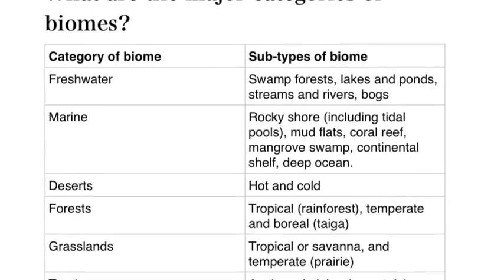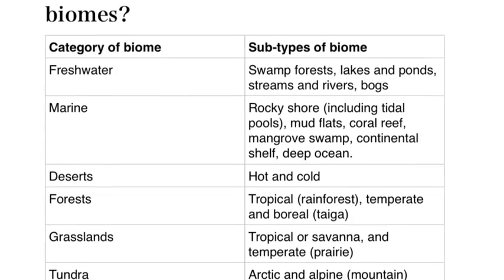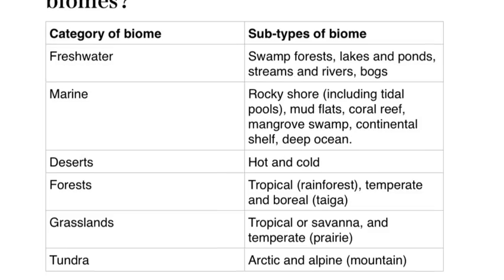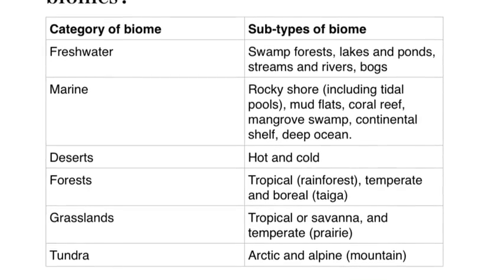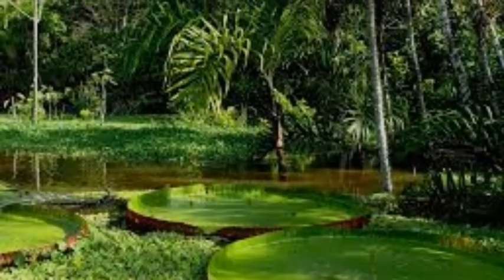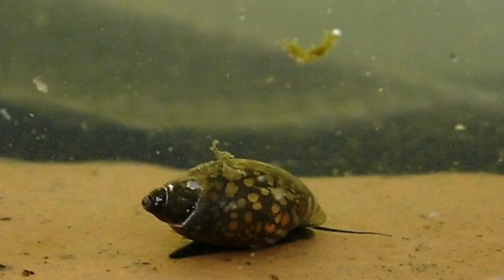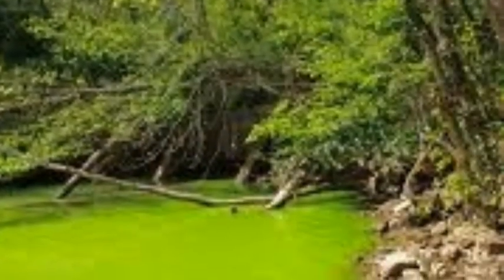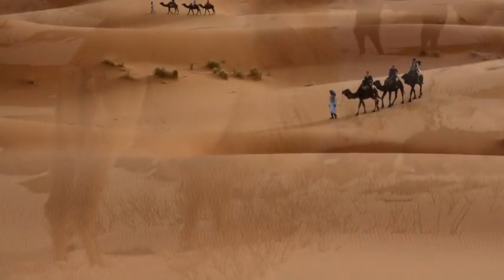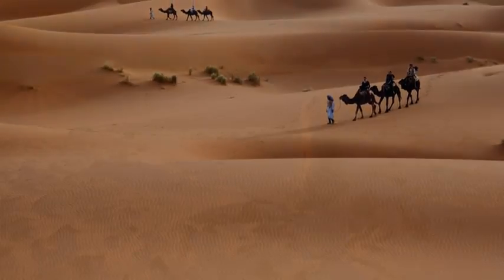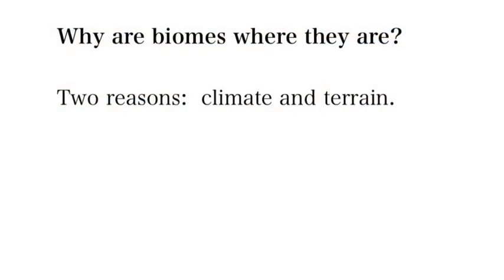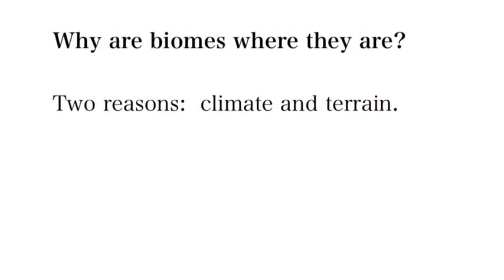Within that mix, you have these subtypes — I would pause this and write all these down. For example, with fresh water, you have swamps, the bottom of lakes, rivers, and ponds. With deserts, you've got cold deserts and hot deserts. With tundra, you've also got the Arctic and the tops of mountains.